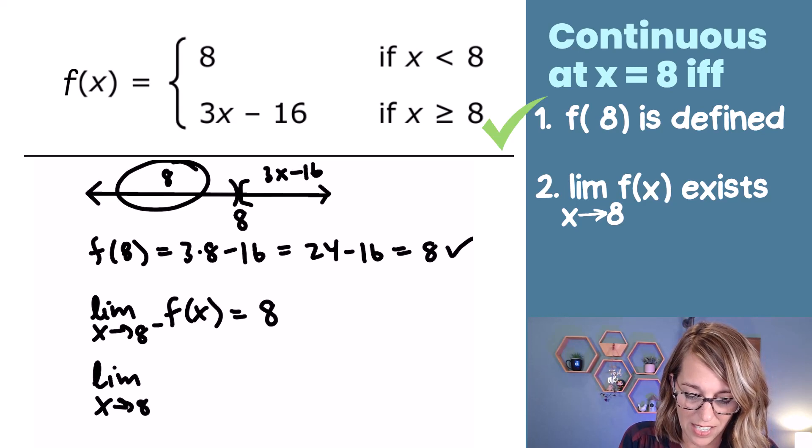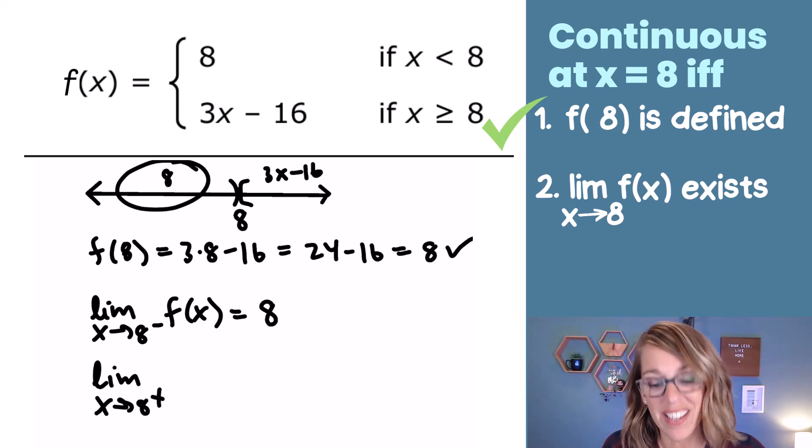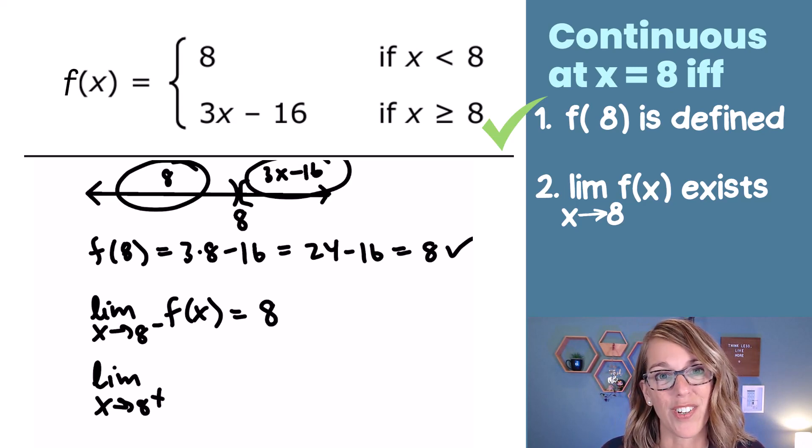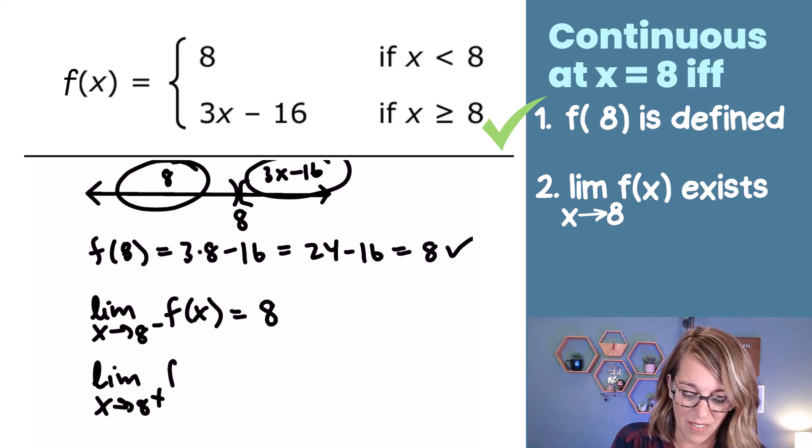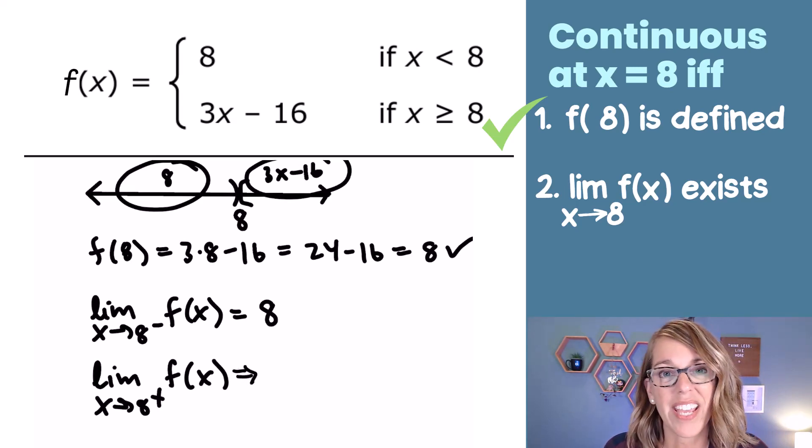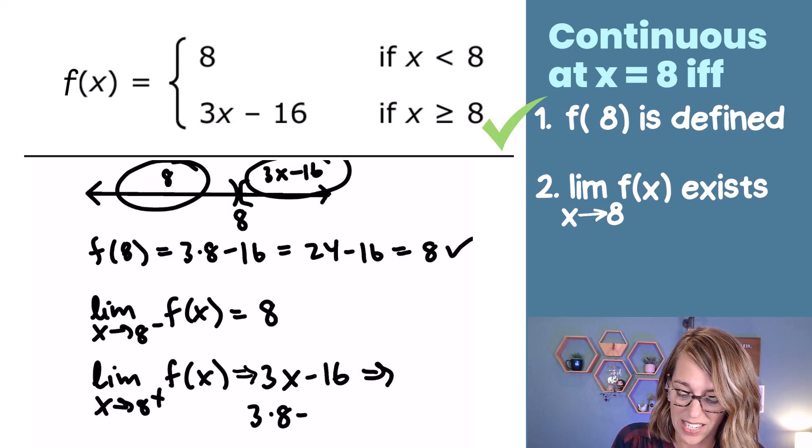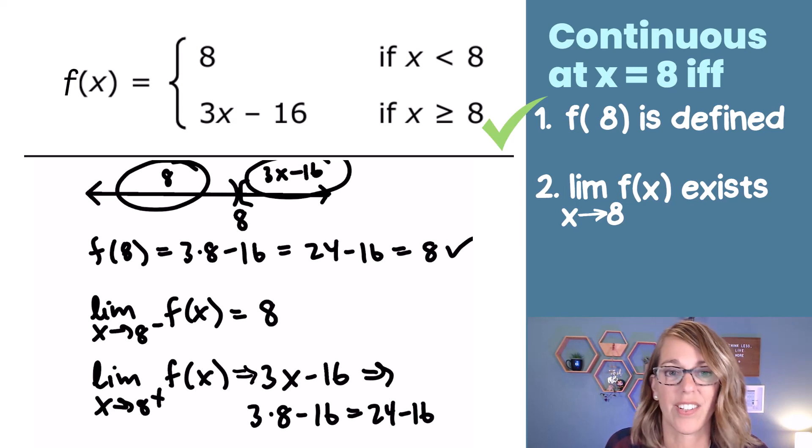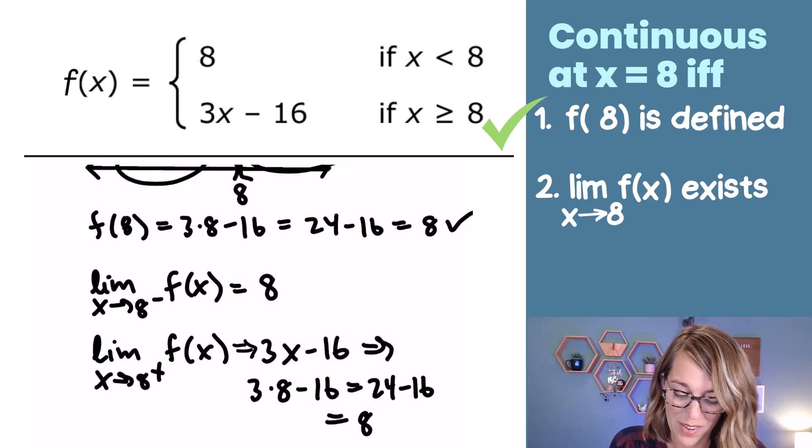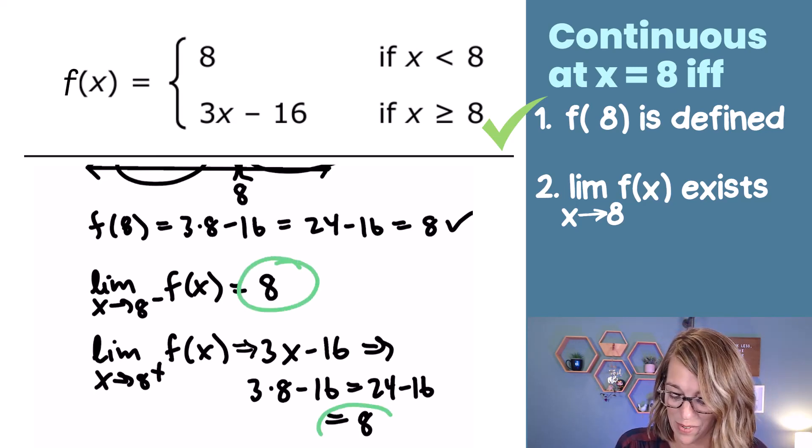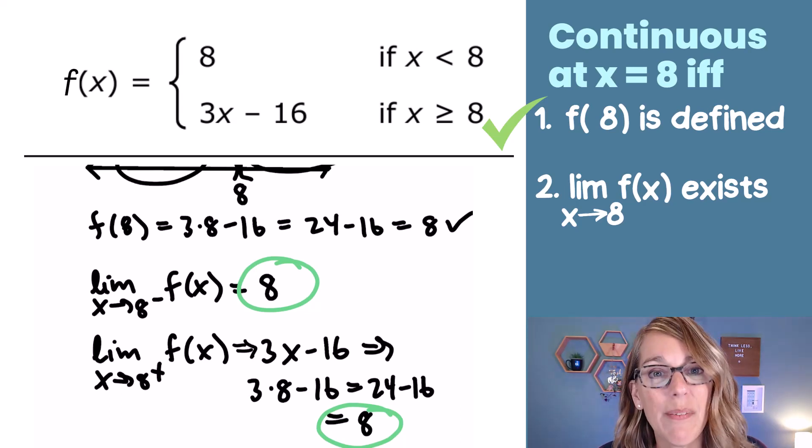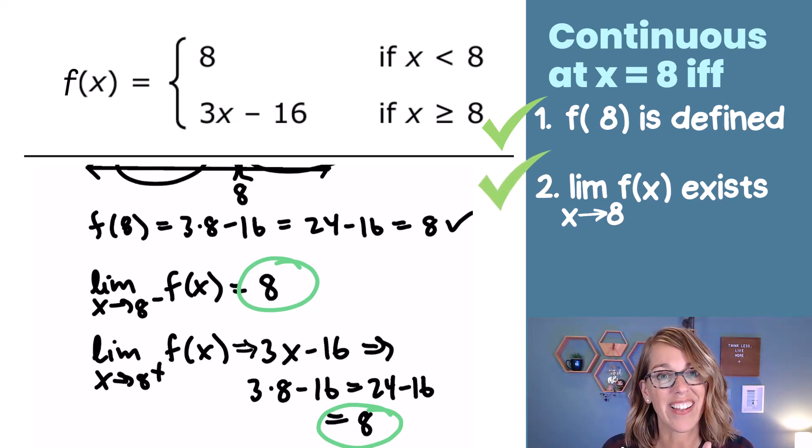To do the limit on the right hand side, so x approaches 8 from the right, this is going to be the second formula of that piecewise function. So from the right of 8, I'm using f(x), the formula 3x minus 16. I can go ahead and just plug 8 into that one. And I get 3 times 8 minus 16, 24 minus 16. There's a lot of eights in this problem, which is equal to 8. So I've got from the left, it's 8, and from the right, it's 8, which means that the limit overall exists. They land on the same value.